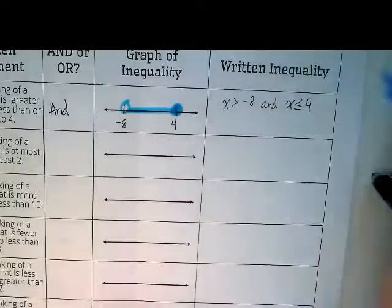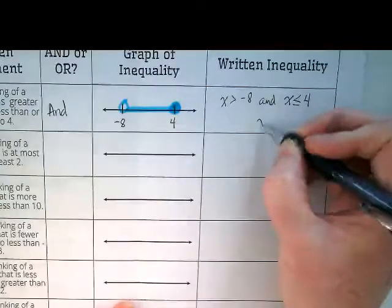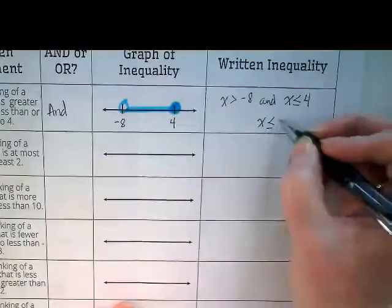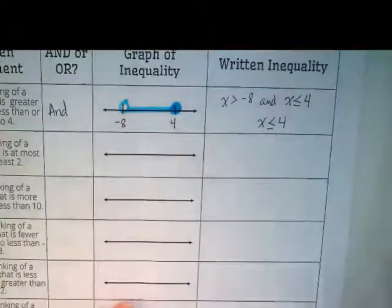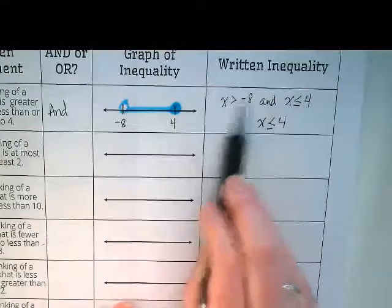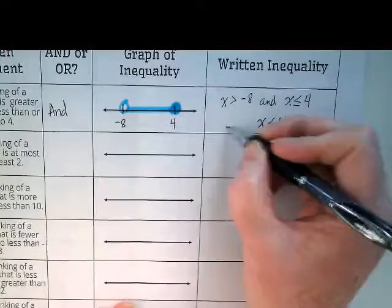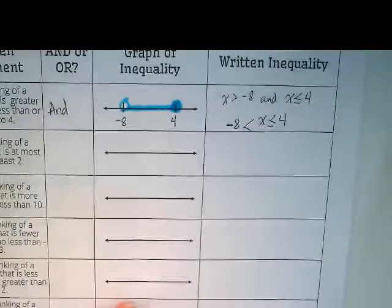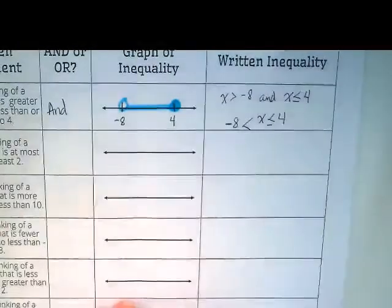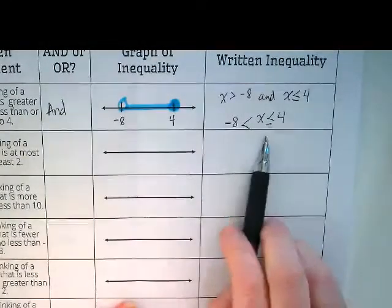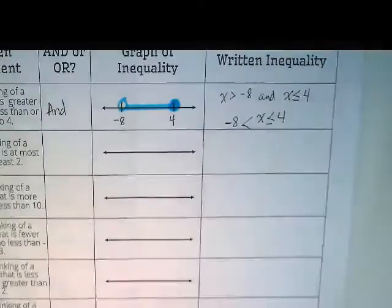And we don't need to, but I'd like us because this is our examples to rewrite this with just a single x in the middle. The one on the right stays the same because the x is on the left. But in this case we're going to have to flip the symbol to get this negative 8 here. Okay. So this reads as negative 8 is less than x which is less than or equal to 4.